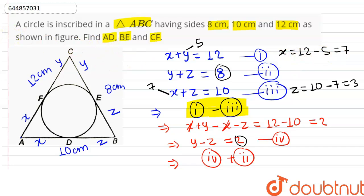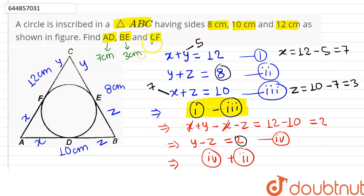BE equals Z, so BE equals 3cm. CF equals Y, so CF equals 5cm. This is our final answer.